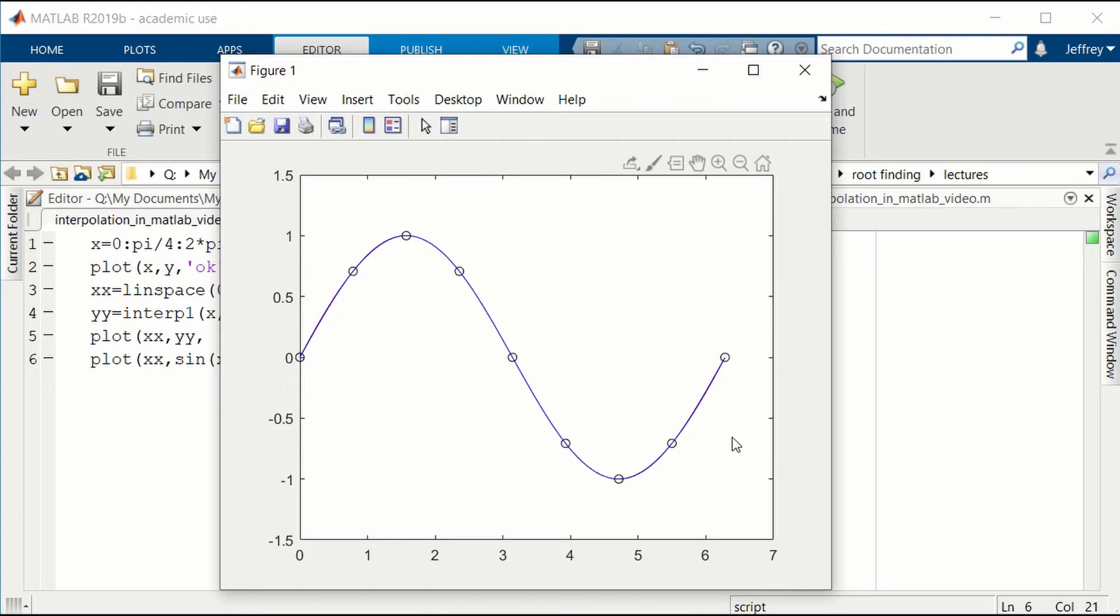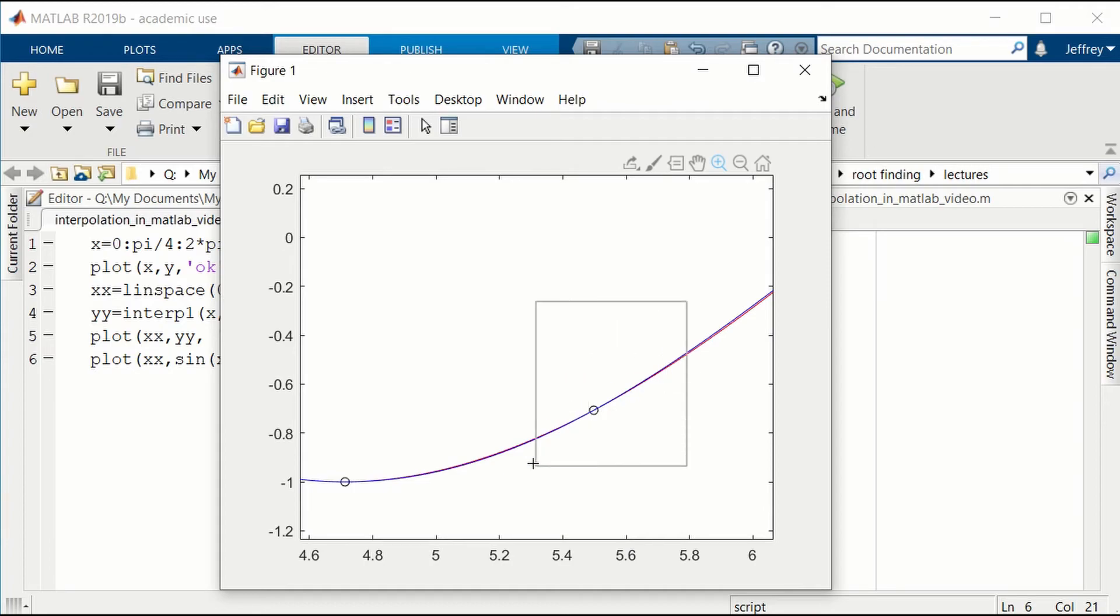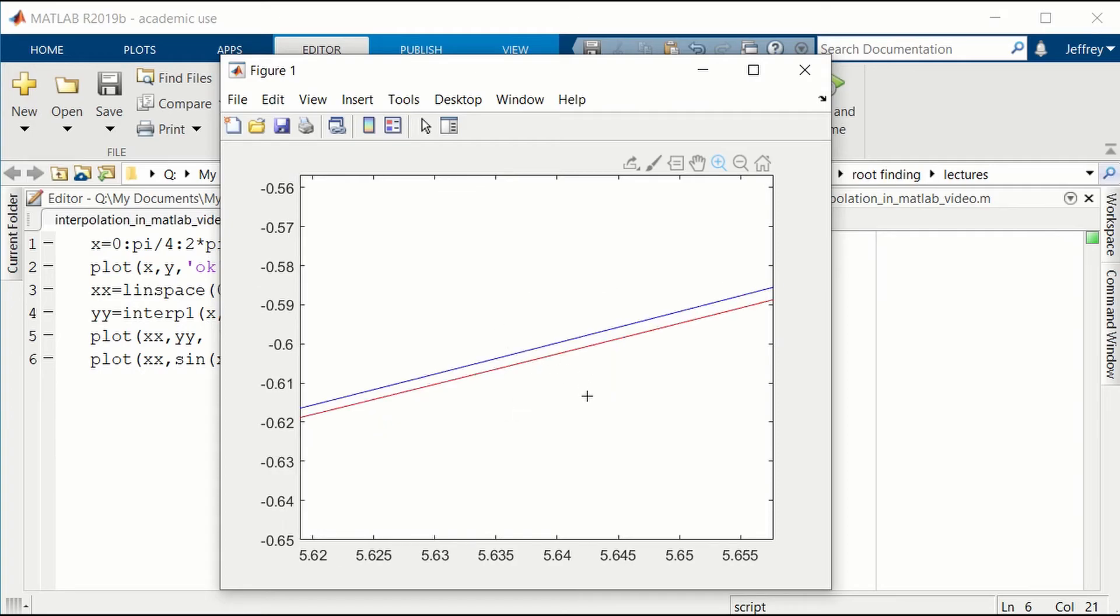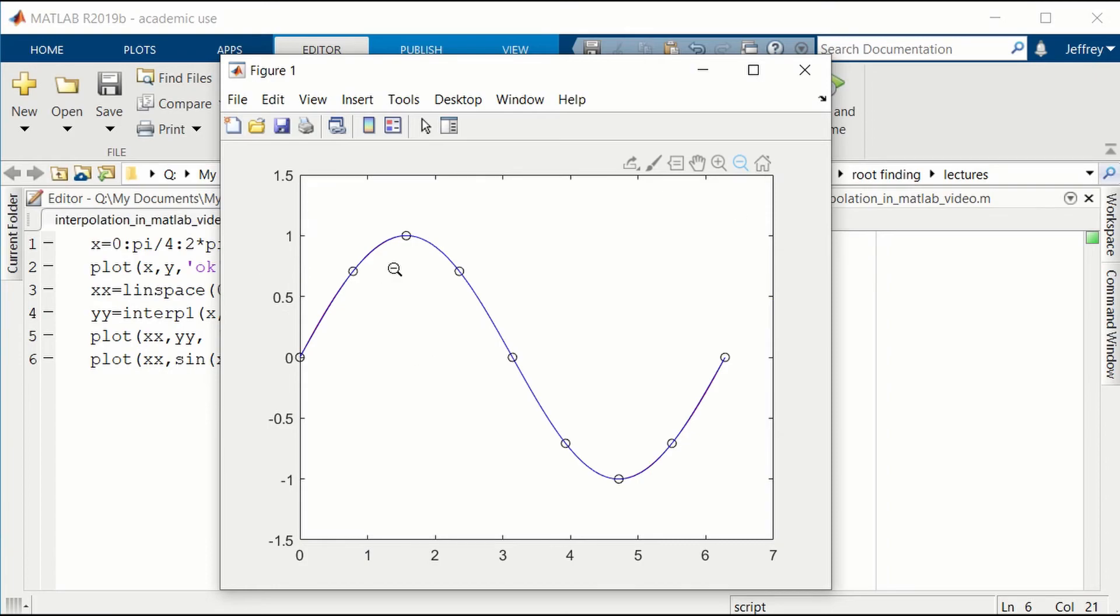And it's very hard to see the red curve from the blue curve. If we can zoom in, maybe at this end here, you can see a little bit of a difference between red and blue. We can zoom in more and more. You see they're not exactly the same, but they're pretty close. The cubic spline interpolation does actually a remarkable job on this sine function.